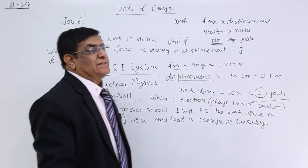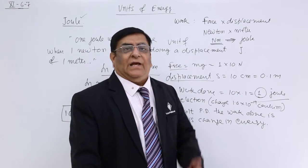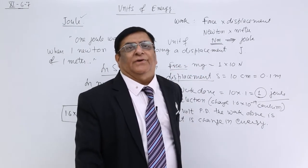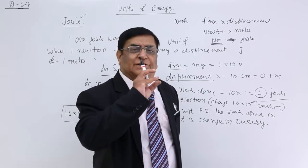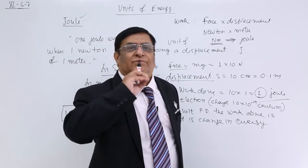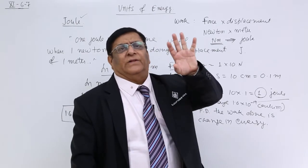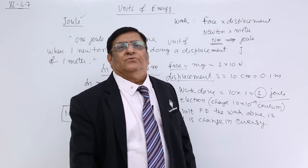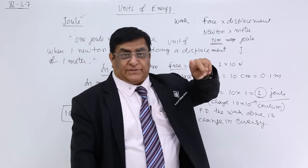Now, there is another practical unit we use at our house. The electricity board is giving us electricity and electricity is a form of energy. They meter the energy given. But their unit is very simple. If I use a bulb of 1000 watt, that is 1 kilowatt, for 2 hours, they will say you have consumed 1 kilowatt into 2 hours. That is 2 kilowatt hour energy.